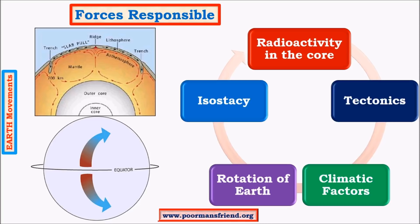Isostasy is an important topic mainly for optional geography students; for general studies only a basic understanding is needed. To explain isostasy with a simple example: consider a tub of water with a bowl floating in it. If you keep adding solid material to the bowl, it starts sinking slowly and there is a proportionate rise in water level around the bowl — a balance or equilibrium is being achieved.